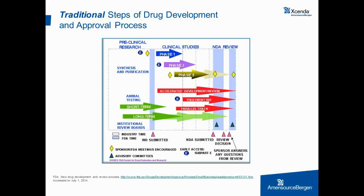Before discussing the expedited programs, I'd like to quickly review the traditional steps for drug development and approval. The preclinical testing phase lasts about 6 to 7 years, during which drug manufacturers complete synthesis and purification of the drug and conduct limited animal testing. Next, the investigational new drug stage takes place, consisting of three phases. In phase one, clinical trials typically use healthy volunteers to determine the drug's basic properties and safety profile. However, since this presentation focuses on cancer, anti-cancer products are evaluated in patients with advanced cancer, as their safety profile does not allow testing in a healthy population.